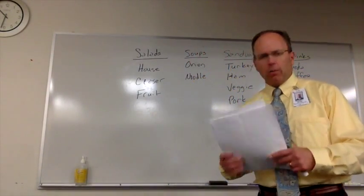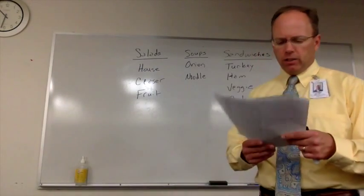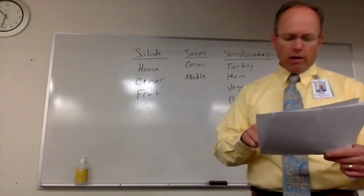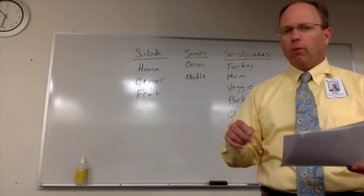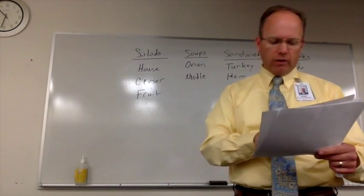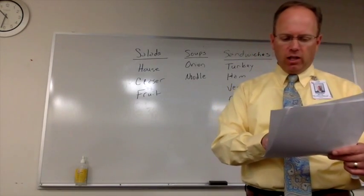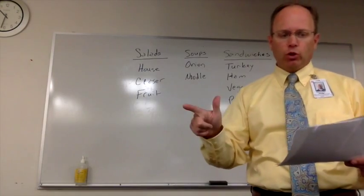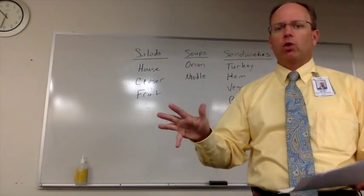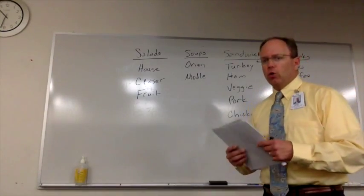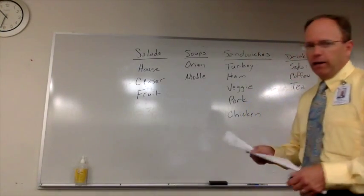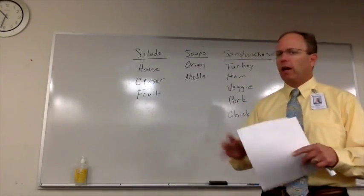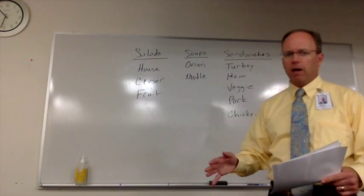If you remember this problem, it talks about Ding's Diner advertising a daily special: choose one item from each column for only $4.95. Each daily special consists of a salad, soup, sandwich, and a drink. So you come into this diner. The $4.95 is just part of the story — it has nothing to do with this problem mathematically.